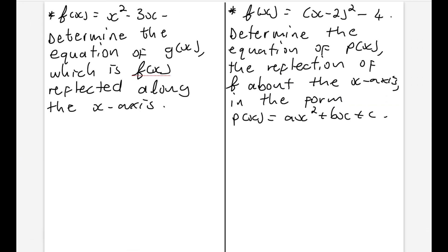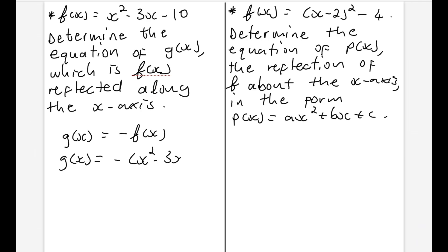For example, if you were told that f(x) = 3x² - 3x - 10, and you were asked to determine the equation of g, which is f(x) reflected along the x-axis, g is almost exactly the same as f(x) except with a minus in front of its y. So g(x) = -(3x² - 3x - 10), which means g(x) = -x² + 3x + 10. This is the reflection of f(x) along the x-axis.